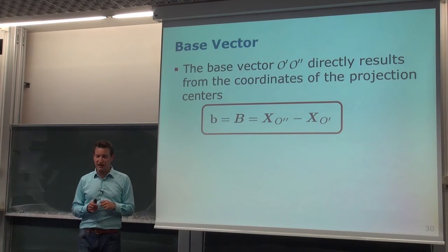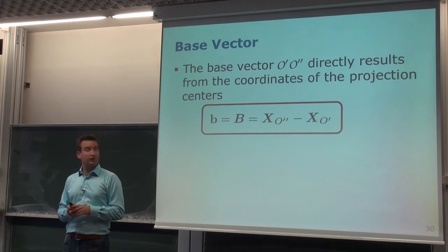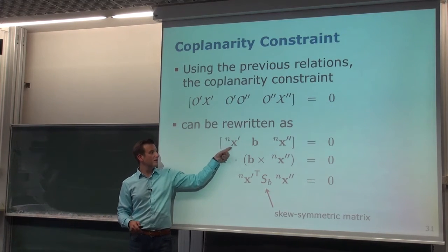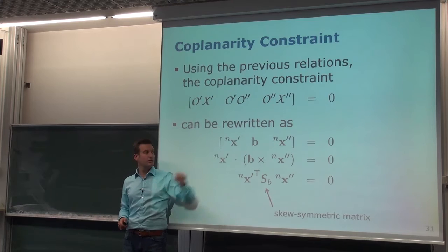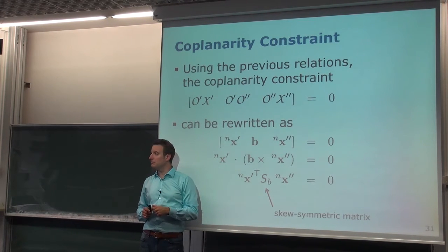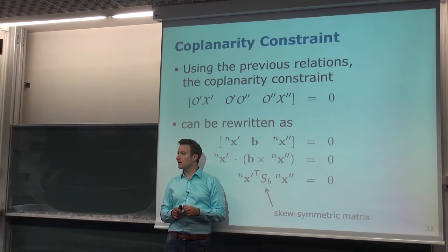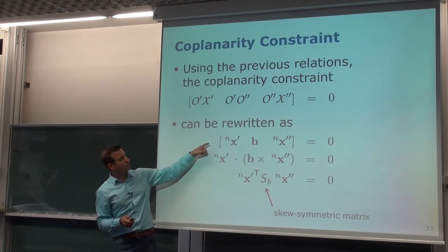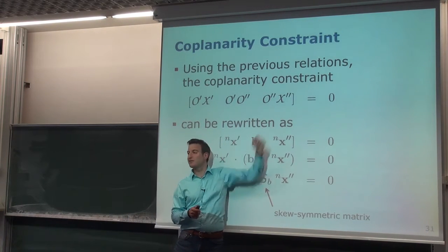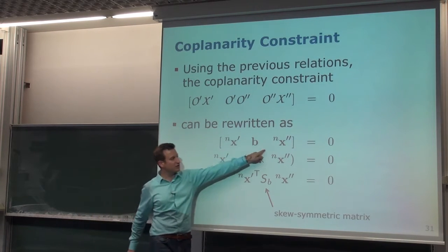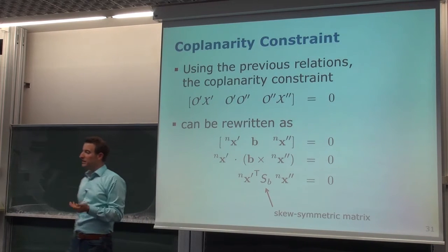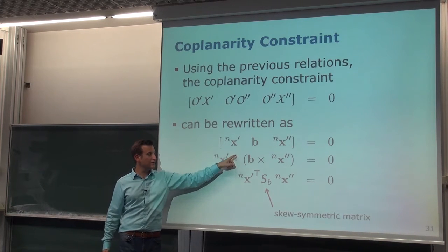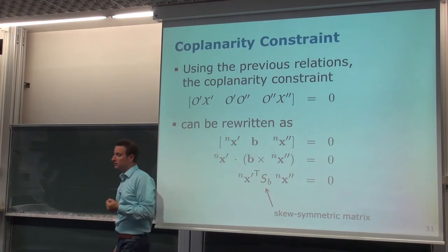Now we take this information and put it into the coplanarity constraint. The coplanarity constraint takes: the normalized direction vector from camera one, the base vector B, and the normalized direction vector from camera two. This is just a search-and-replace of those three elements into the scalar triple product expression, giving us an equation that must equal zero.